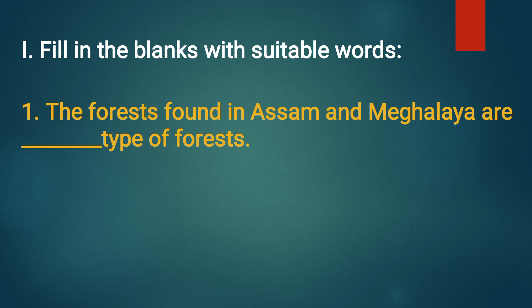The forests found in Assam and Meghalaya are dash type of forests. Answer: evergreen. The forests found in Assam and Meghalaya are evergreen type of forests.